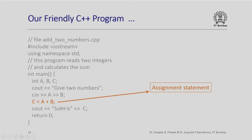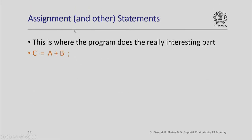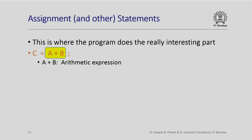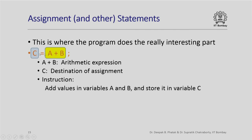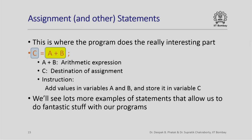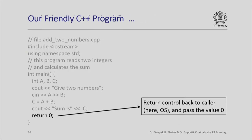Here is another interesting part: the assignment statement. C is being assigned the value of A plus B. The expression A plus B is an arithmetic expression — it takes the value stored in variable A and the value stored in variable B and adds them. C is the destination of the assignment, where the result of evaluating the arithmetic expression is stored. This entire assignment statement is an instruction to add the values in the two variables and store the result in variable C. We will see many more kinds of statements that allow us to do really cool things in C++ programs.